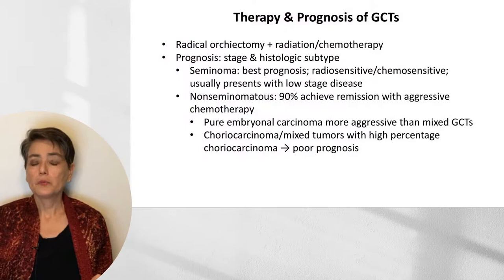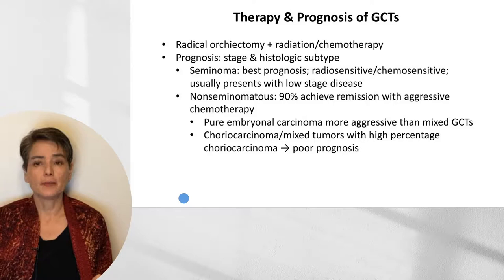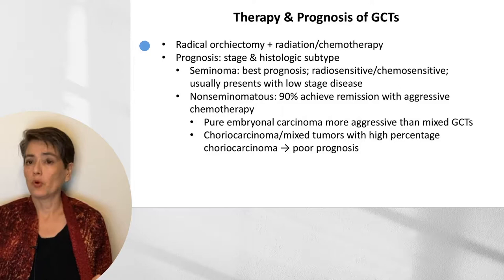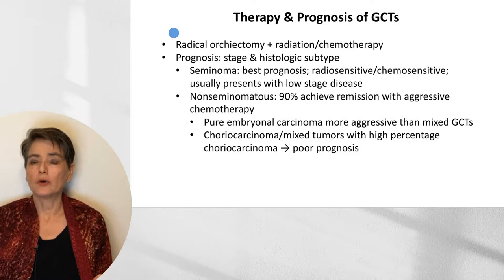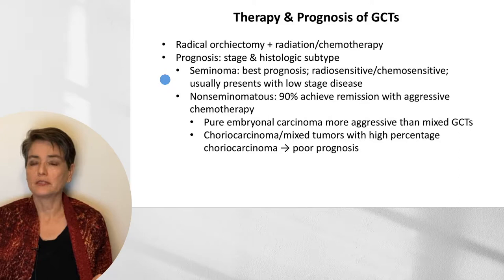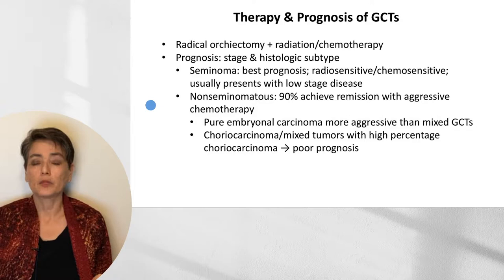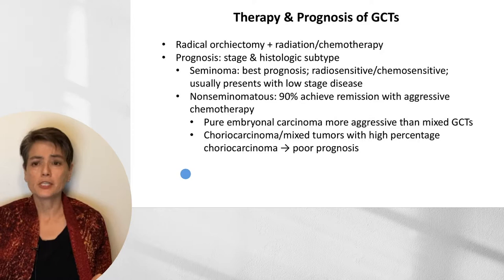When thinking about therapy and prognosis of germ cell tumors, the distinction into seminomatous and non-seminomatous becomes useful. After radical orchiectomy, additional treatment may not be needed, or radiation and/or chemotherapy may be employed. Prognosis depends on tumor stage and histologic type. Seminoma tends to have the best prognosis because it is exquisitely radiosensitive and chemosensitive, and as an indolent tumor usually presents at low stage. Even with non-seminomatous tumors, we can achieve remission in about 90% of cases with aggressive chemotherapy. Exceptions include pure embryonal carcinoma, which is more aggressive and has a worse prognosis, and choriocarcinomas or mixed tumors with a high percentage of choriocarcinoma, which also have a poor prognosis.